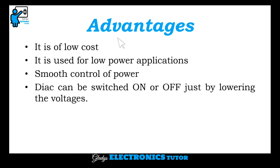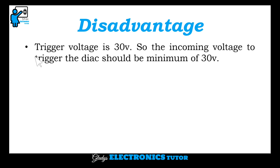The advantages are: it is of low cost, it is used for low power applications, it provides smooth control of power, and DIARC can be switched on or off just by lowering the voltage. The disadvantage is that the trigger voltage is 30 volts, so the incoming voltage to trigger the DIARC should be a minimum of 30 volts.